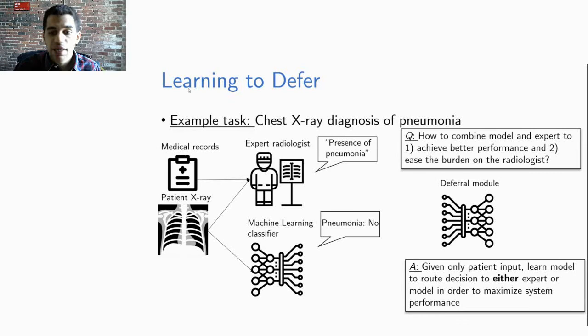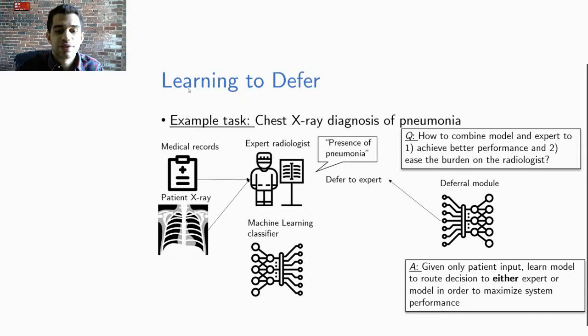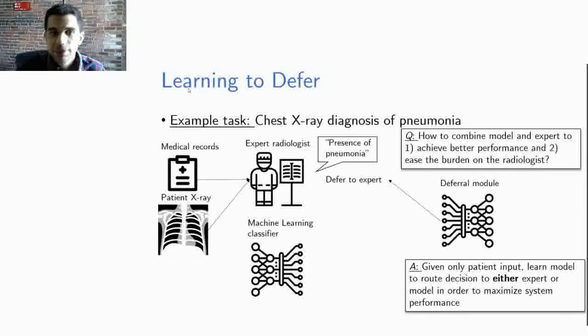One possible solution to this problem is to learn a module that we call a deferral module that given only a patient's input, the x-ray routes the decision to either the expert or the model so that only one of them is queried. If the deferral module says to defer the decision to the expert, then the expert is queried and makes the final decision.